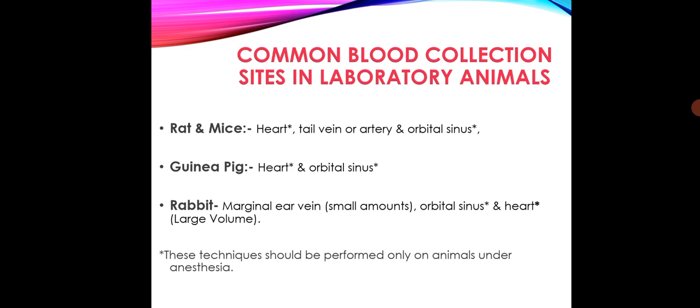Common blood collection sites in laboratory animals: In rat and mice — heart, tail vein or artery, or orbital sinus. Guinea pig — heart and orbital sinus. In rabbit — marginal ear vein for small amounts of blood. Note: techniques marked with a star should be performed only on animals under anesthesia.